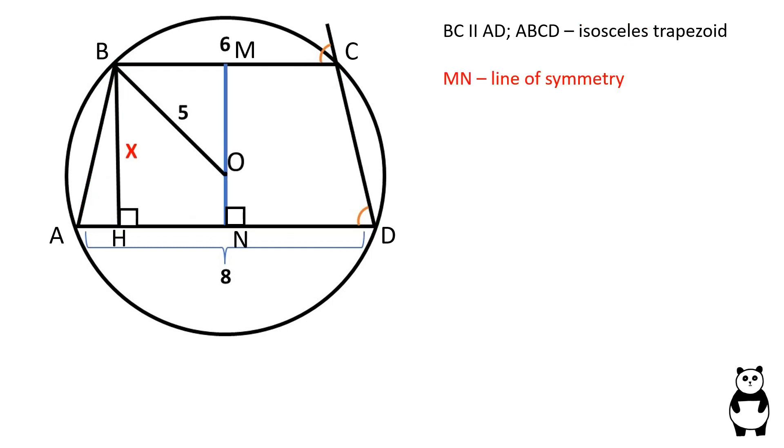In an isosceles trapezoid, the line of symmetry goes through the midpoints of the bases and is perpendicular to the bases of the trapezoid. The line of symmetry will also go through the center of the circle.